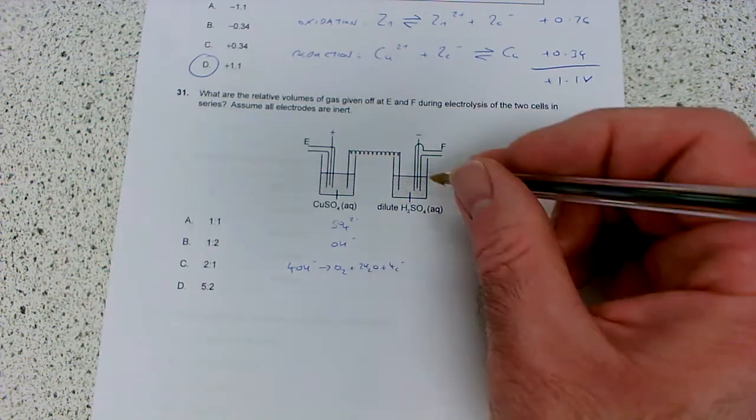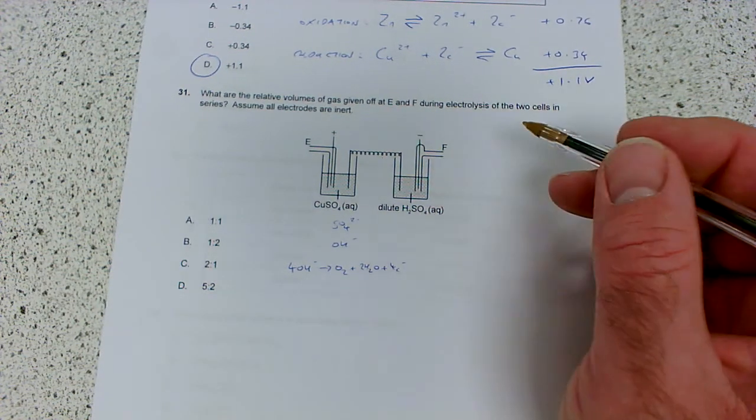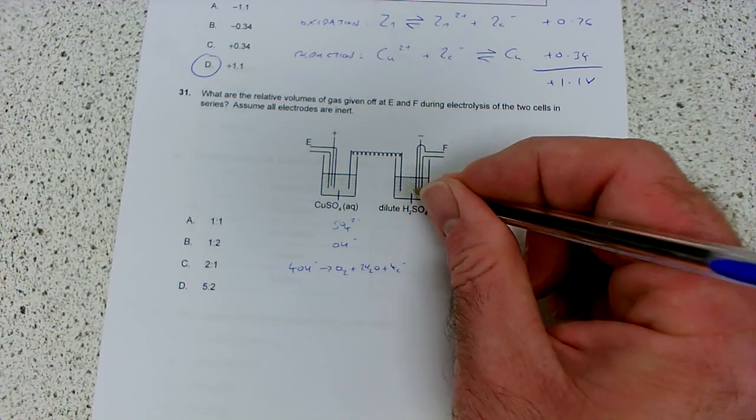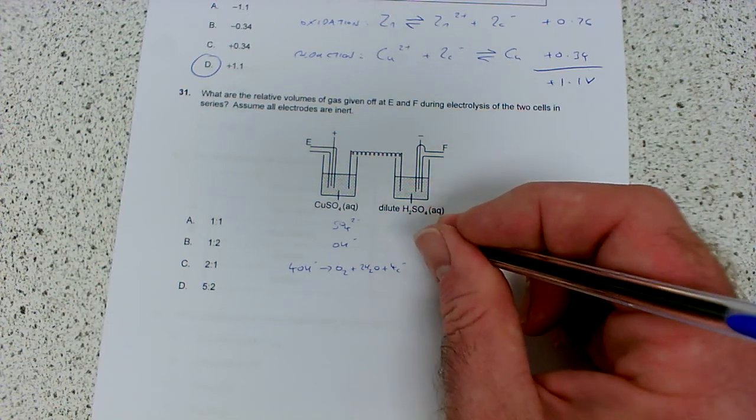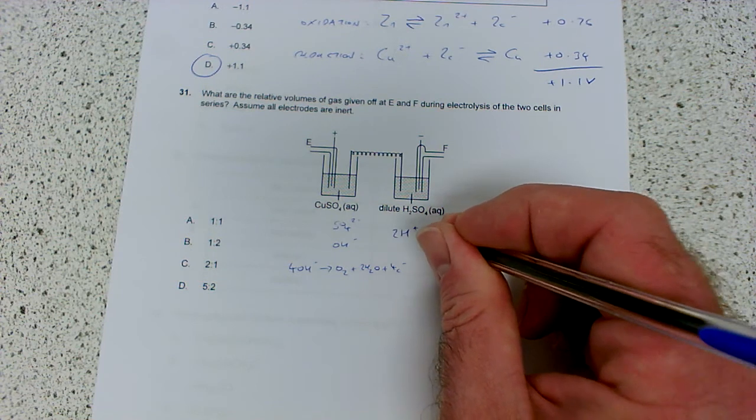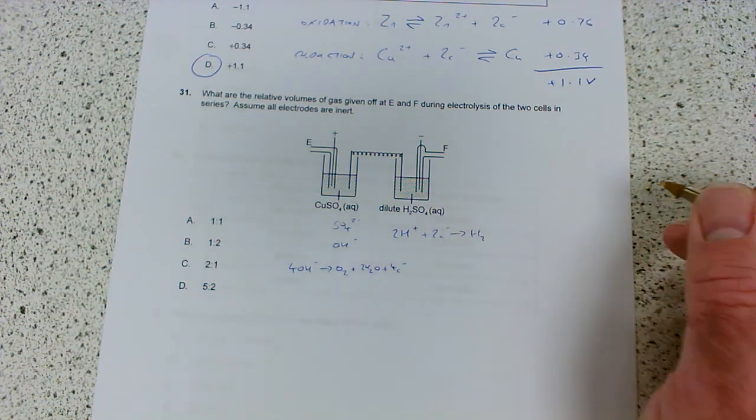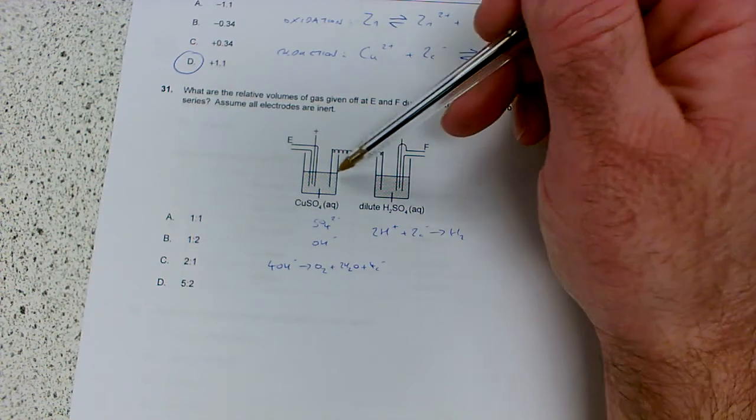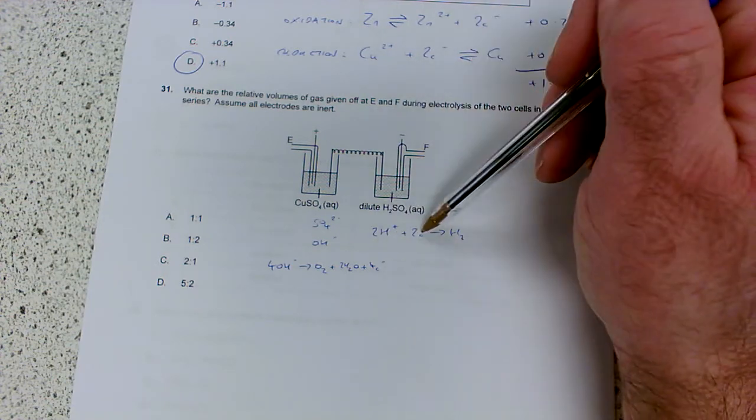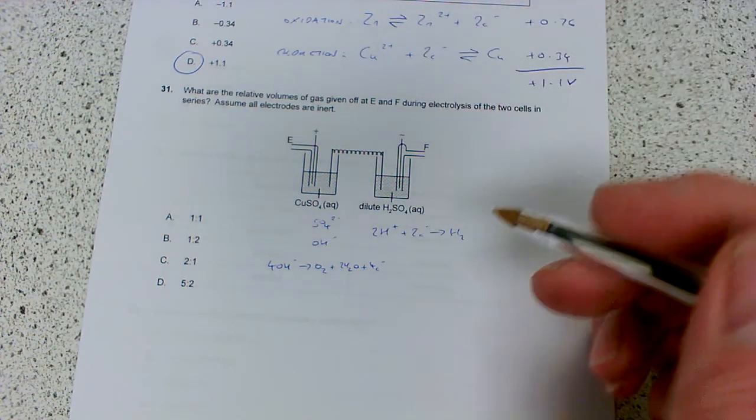At the negative electrode, there's only H+ ions from the acid and water, so 2H+ gains 2e- to give H2. Assuming the same current through both, we need to balance electrons. We've got 4e- in this one and 2e- in the other.